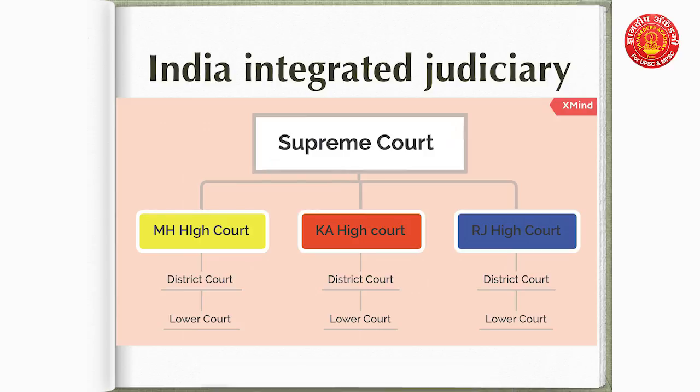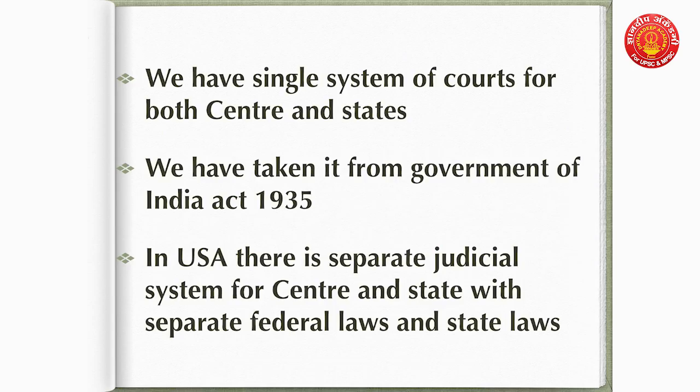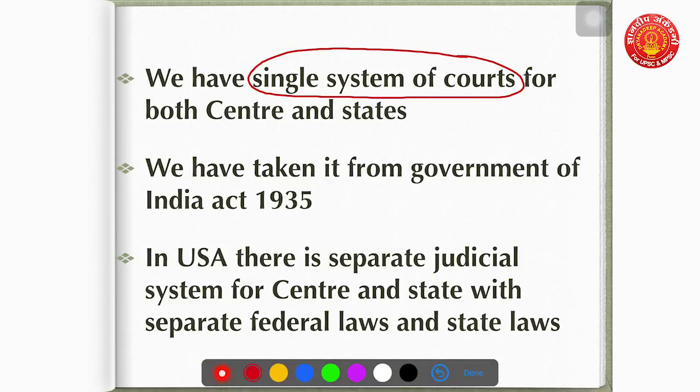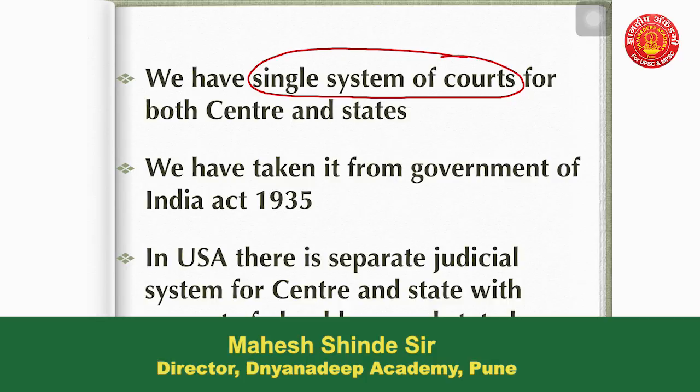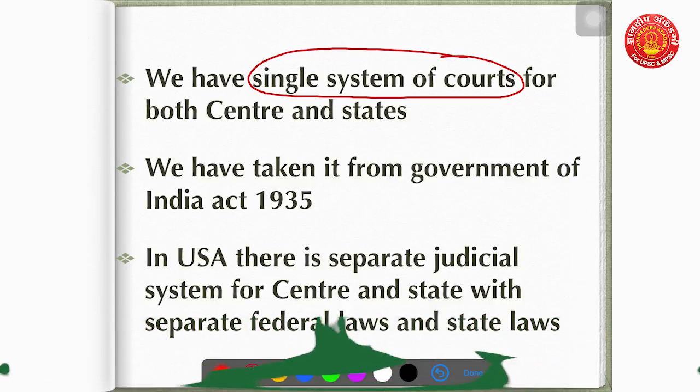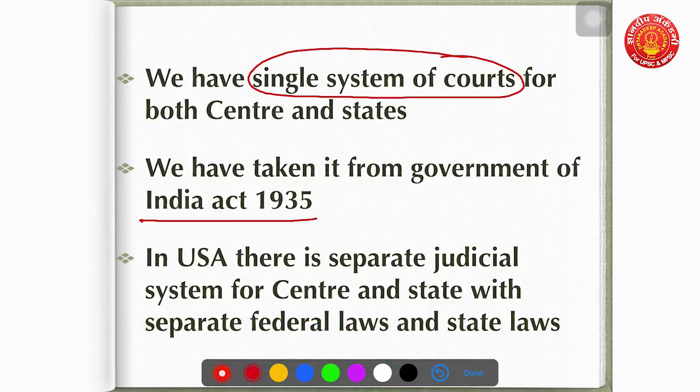This shows we have an integrated judiciary. This differs from the judicial system in America. We have a single system of courts for both center as well as states. Importantly, we have taken this single system of courts from the Government of India Act 1935 — as mentioned in the first lecture, most of the Indian Constitution, almost 60 to 65 percent, has been borrowed from the Government of India Act 1935.